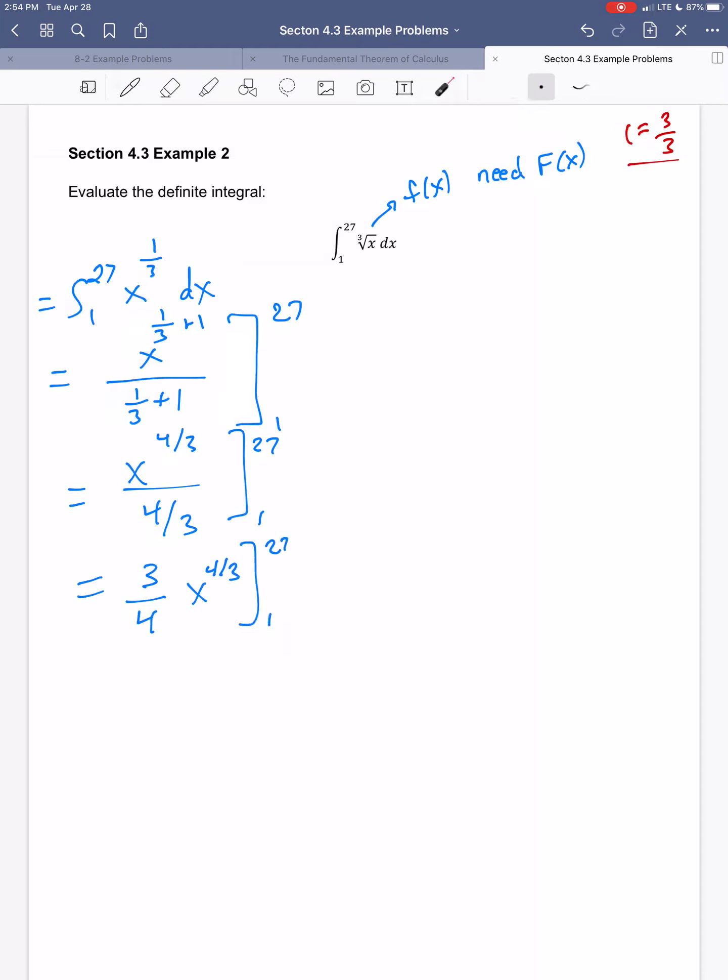And we can check this. What would happen if I took the derivative of this? I'd bring the four-thirds down. Four-thirds times three-fourths would cancel. And then I'd subtract 1 from this exponent. Four-thirds minus 1 would be four-thirds minus three-thirds, which would be back to the one-third that we've got there.